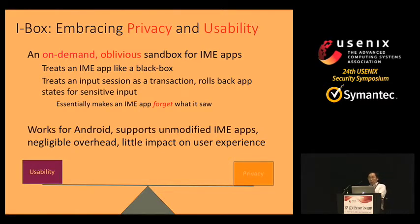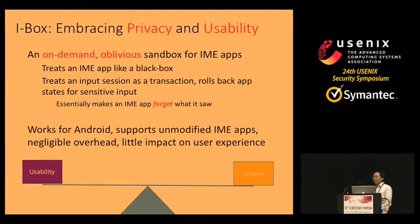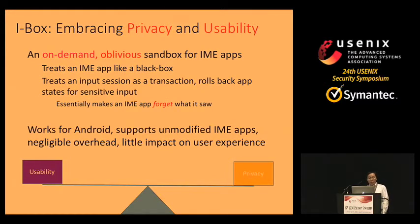We provide an on-demand oblivious sandboxing approach for IME apps, called IBOX. Because IME apps contain a lot of binary code and may actually transfer user input, we treat the IME app as a black box. We treat each input session as a transaction, and if the session is found to be sensitive, we roll back the IME app's state — making the IME app forget what it saw. IBOX works for Android, supports unmodified IME apps, and has negligible overhead with little impact on user experience.